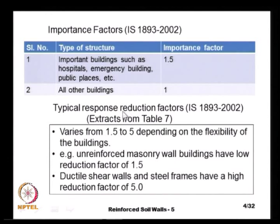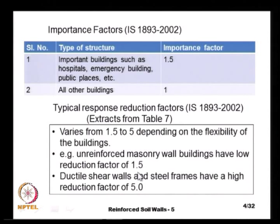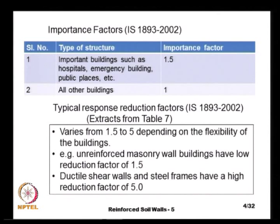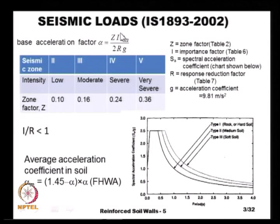There is also another factor called the response reduction factor, that is capital R in the denominator. Depending on the flexibility of the structure, the response reduction factor varies from 1.5 to 5. For very brittle structures like unreinforced masonry or shear walls, R is 1.5, whereas for steel frames and highly ductile shear walls, R is 5. Once we substitute all the different parameters into the equation, we get the base acceleration factor, and from that we can calculate the average acceleration coefficient within the soil.